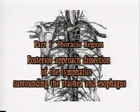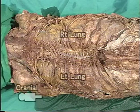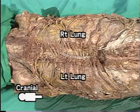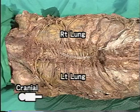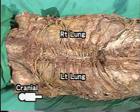Lymphatics of the trachea and esophagus will be dissected after removal of the spinal column and the thoracic aorta. The spinal column and posterior portion of the thoracic cage have already been removed.